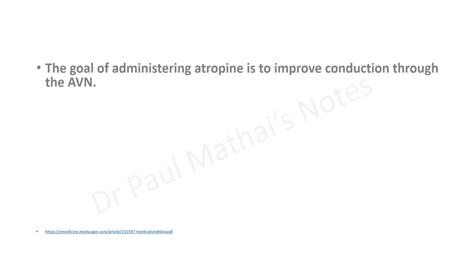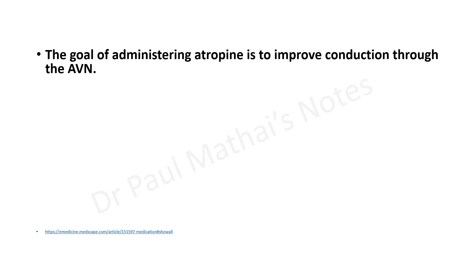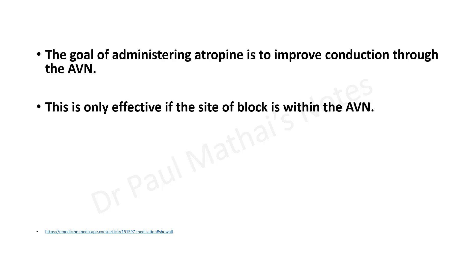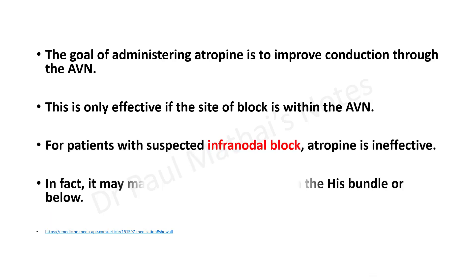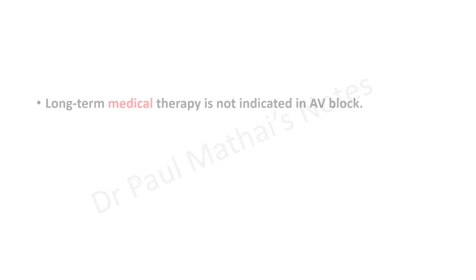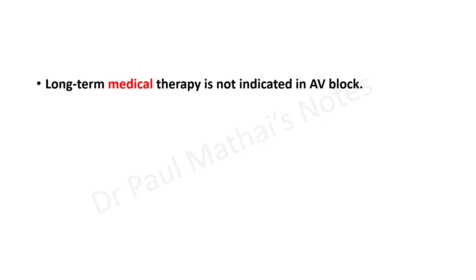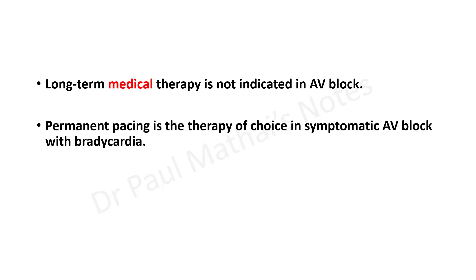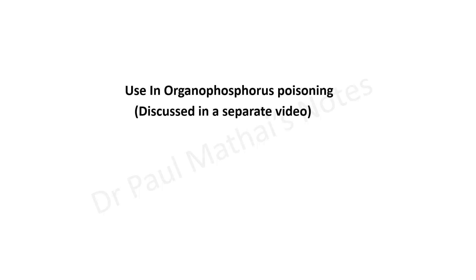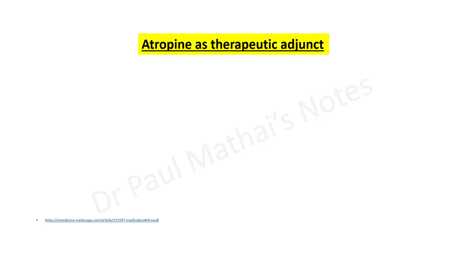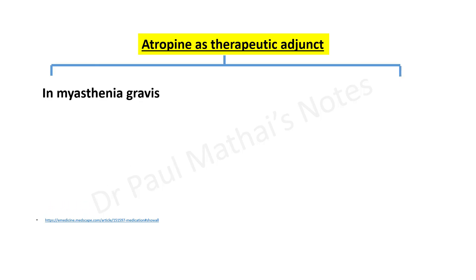Atropine can be used for symptomatic bradycardia and heart block; the goal is to improve conduction through the atrioventricular node. This is only effective if the block is within the AV node — in infranodal block, atropine may worsen the condition. Long-term medical therapy is not indicated for AV block; cardiac pacing is the therapy of choice. The use of atropine in organophosphorus poisoning will be discussed separately. As a therapeutic adjunct, atropine is used in myasthenia gravis and cobra envenomation.